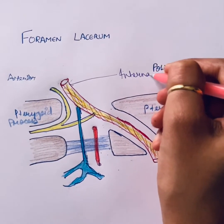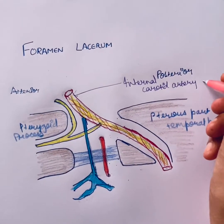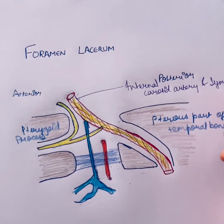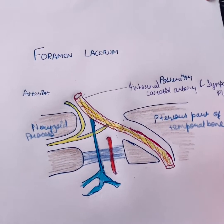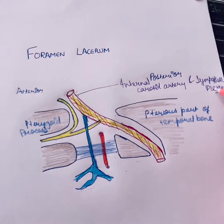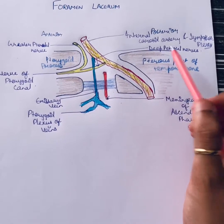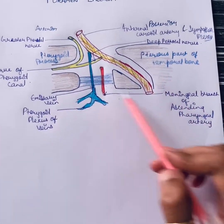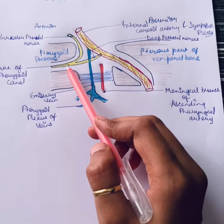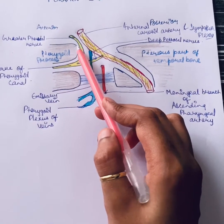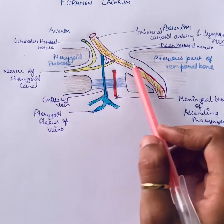These are all the contents of the foramen lacerum: the internal carotid artery and sympathetic plexus, the meningeal branch of the ascending pharyngeal artery, the emissary vein, and the nerve of the pterygoid canal — formed by the greater petrosal nerve and deep petrosal nerve from the sympathetic plexus.